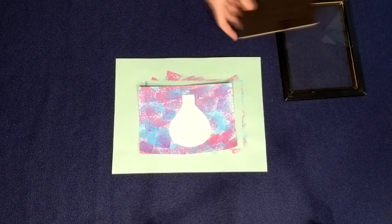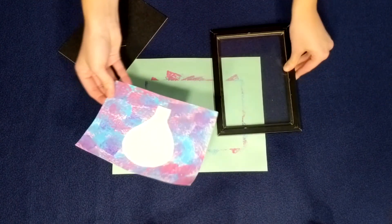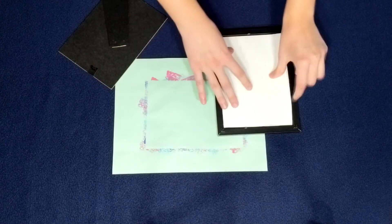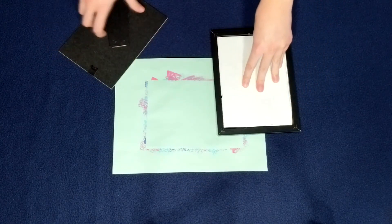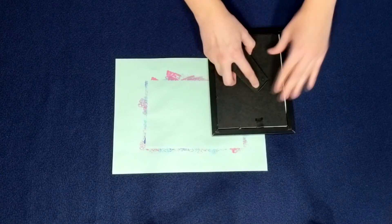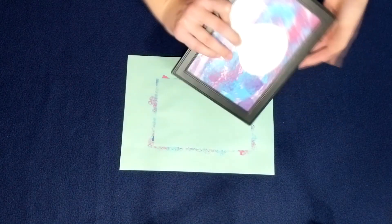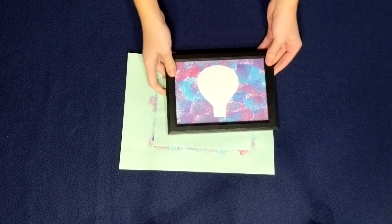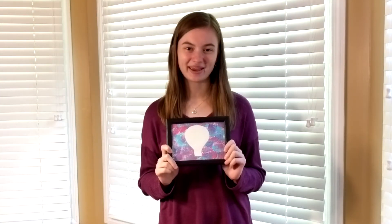So now we're going to put it in the frame. Make sure to put the image to the front of the picture frame so you see it through the glass. And then put the back on. And there you have it. And that's how you make your very own sponge art painting.